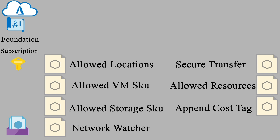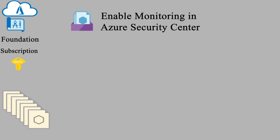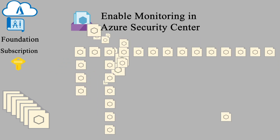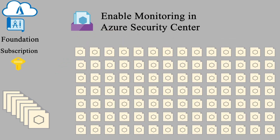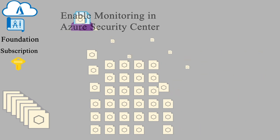We'll also have a policy to deny certain resource types, so we can block resources we don't want in our environment. Finally, we'll use a cost tag through policy — when you deploy this, the resource groups themselves will have a cost tag, and all resources in them today and in the future will be appended with the same cost tag. Besides that, we have an initiative for enabling monitoring through Azure Security Center, which includes almost a hundred built-in policies.